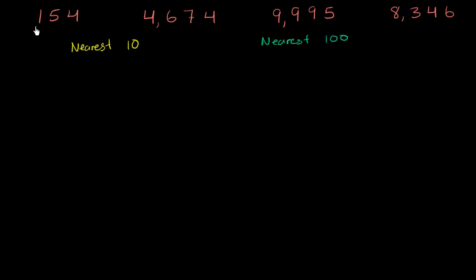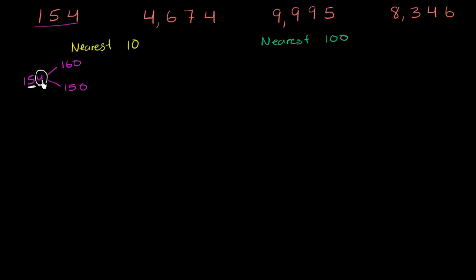Let's start with 154. What is the multiple of 10 above 154? Well, it's 160. And the multiple of 10 below 154 is 150. So we're going to round up to 160 or down to 150. When we're rounding to the nearest 10, we need to look at the ones place — one place to the right of the place we're rounding. We look at this four in the ones place. Since four is less than five, we round down to 150.